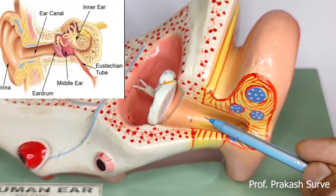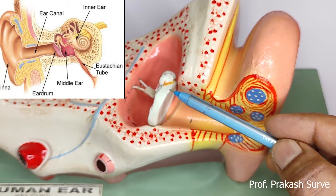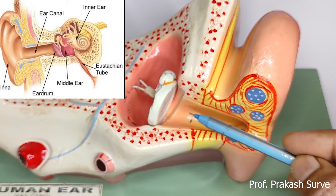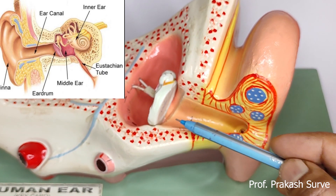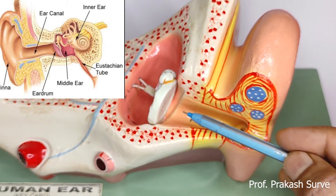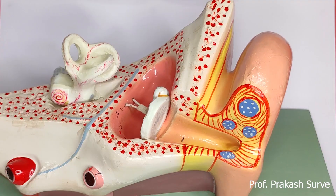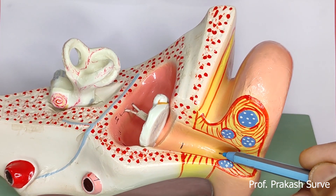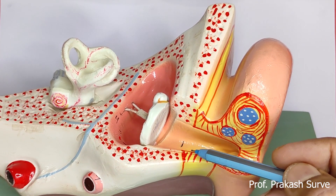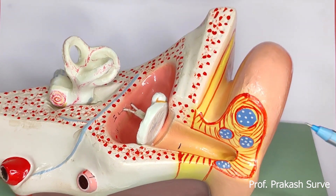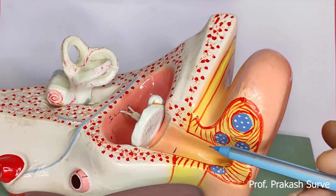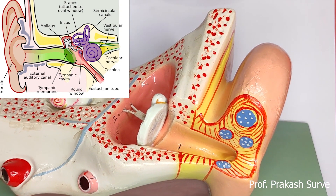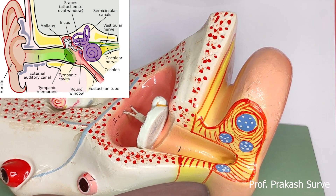The auditory canal ends at the eardrum and transfers the sound waves to the eardrum. There are very fine hair and wax-secreting sebaceous glands in the skin of the ear pinna as well as in the auditory canal, which prevent dust and small insects from entering the ear.